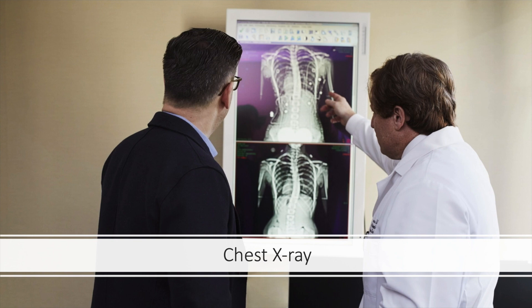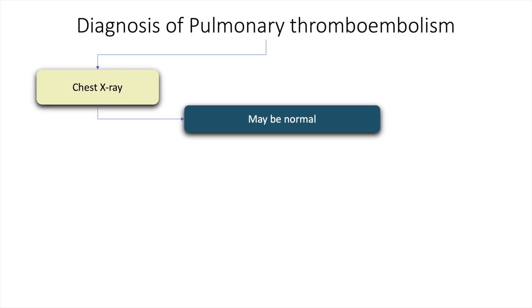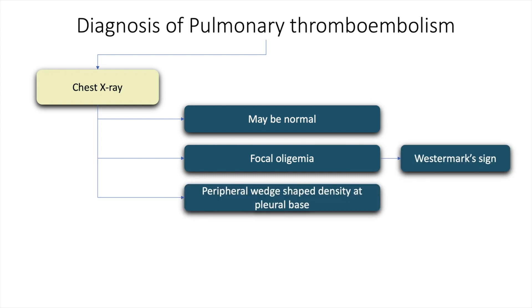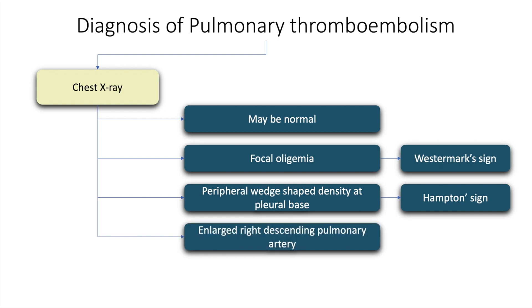The chest x-ray in pulmonary thromboembolism may be normal, but it may also show focal oligemia — this is called the Westermark sign. Peripheral wedge-shaped densities at the pleural base is called the Hampton sign, and an enlarged right descending pulmonary artery is called the Pallas sign.